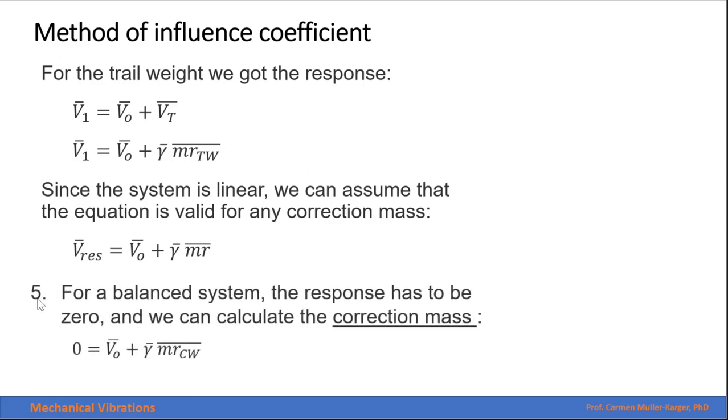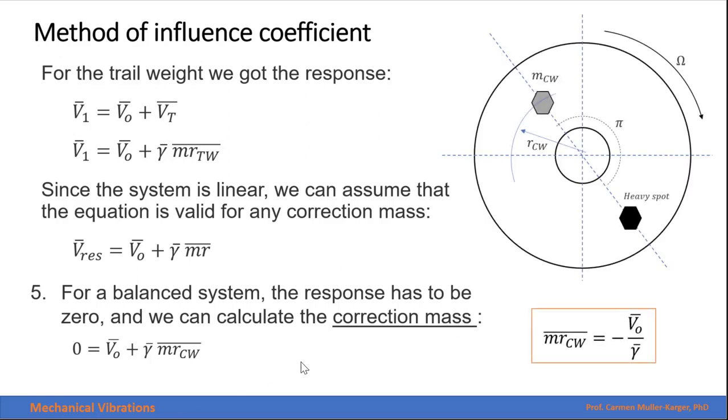Step 5 is set up this response as 0 to get a balanced system. And then we can name the mass that gives us a 0 amplitude as our correction mass. Therefore, the correction mass that will counteract the heavy spot of the system that is creating the unbalance will be calculated as the initial response divided by the influence coefficient.